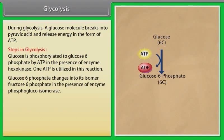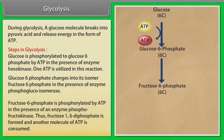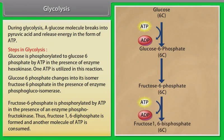Glucose-6-phosphate changes into its isomer fructose-6-phosphate in the presence of enzyme phosphoglucoisomerase. Fructose-6-phosphate is phosphorylated by ATP in the presence of enzyme phosphofructokinase, and fructose-1,6-diphosphate is formed; another molecule of ATP is consumed.